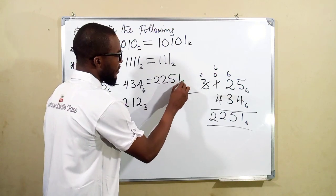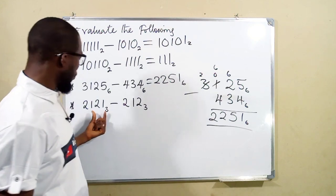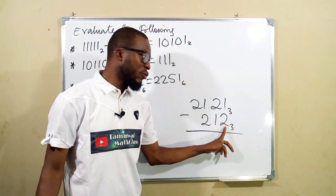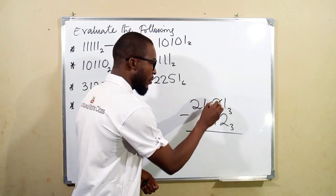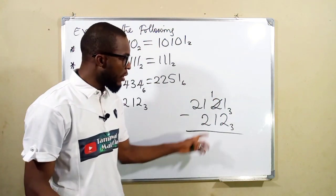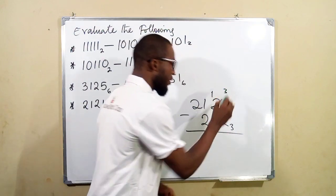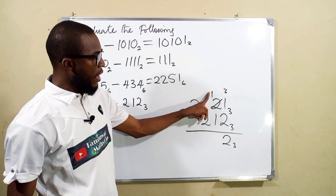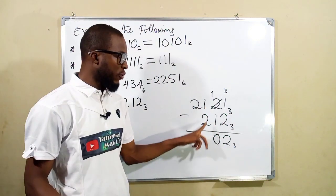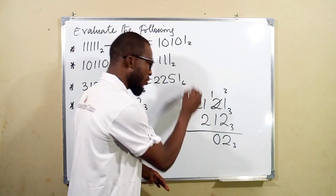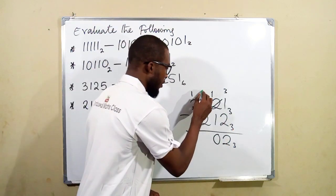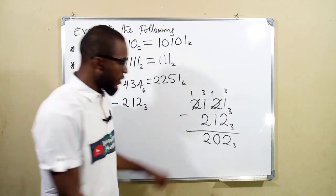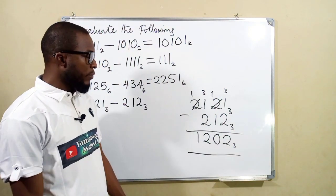The last problem: 2121 minus 212 in base 3. Starting from the right: 1 minus 2 can't work, so we borrow 1 bundle. We take 1 bundle away from the 2, leaving 1, and the bundle comes here as 3, which is our base. So 3 plus 1 is 4, and 4 minus 2 is 2. Then: we have 1 bundle, we borrow 1 leaving 1, it comes as 3. So 3 plus 1 is 4, and 4 minus 2 is 2. The remaining 1 bundle minus nothing is 1. The result is 1202 in base 3.